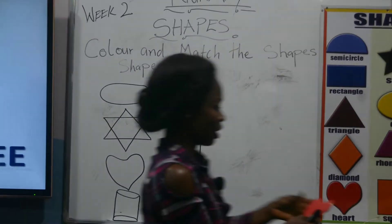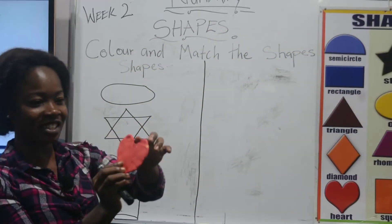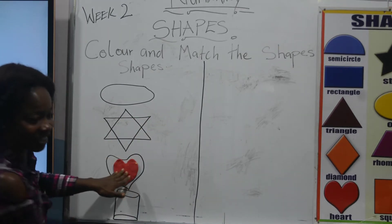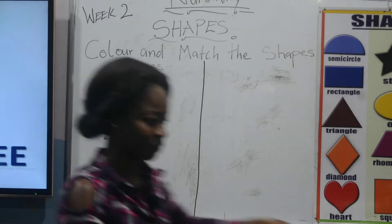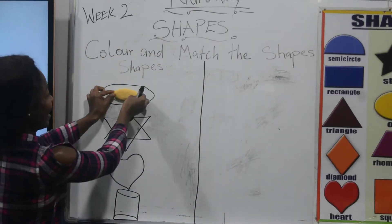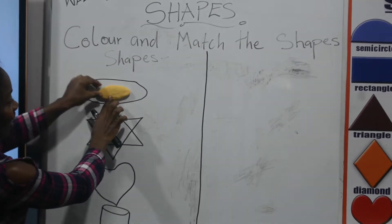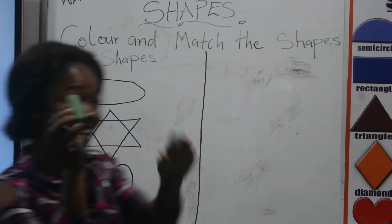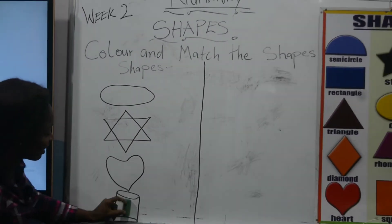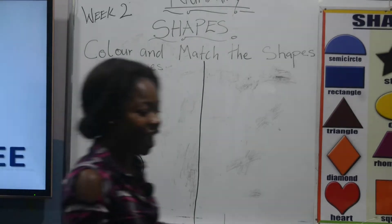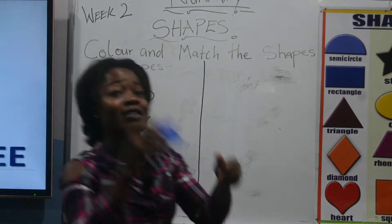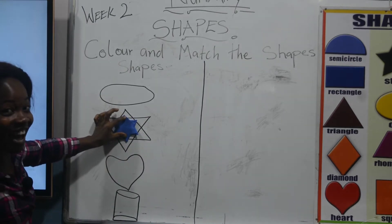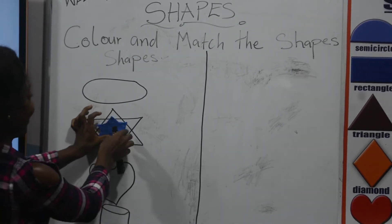Now we are going to compare. So heart is in this form, in this shape — you can see your heart here. And we have oval over here. Our cylinder is here — cylinder shape, okay. And our star — do you like the star? You like it and I'll come and give it to you!